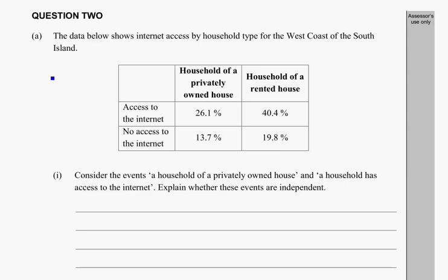Question 2 from the sample exam. The data below shows internet access by household type for the west coast of the South Island. We're looking at privately owned houses and the amount of internet access they have — whether the house is rented or privately owned, and whether they have internet access or not.